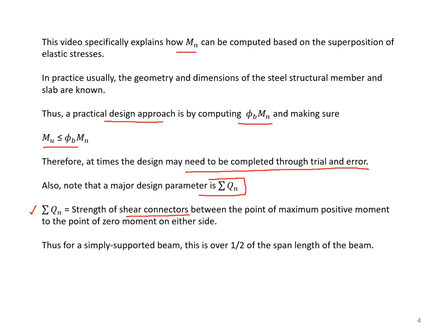A major design parameter is sigma-QN. Sigma-QN is the strength of shear connectors between the point of maximum positive moment to the point of zero moment on either side. Therefore, for a simply supported beam, this is over one half of the span length of the beam.